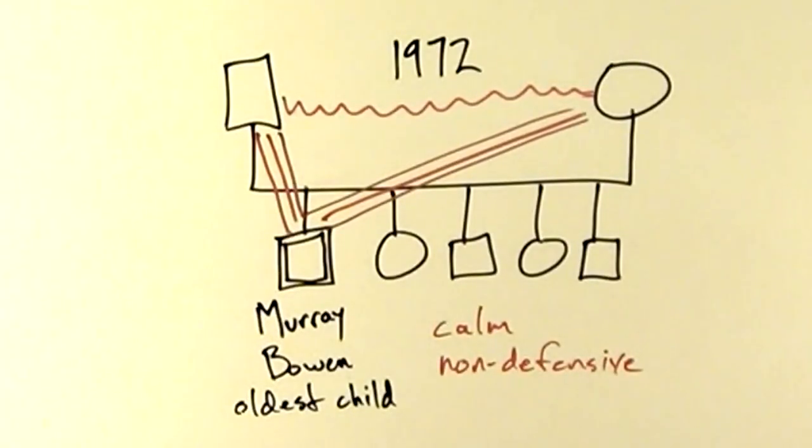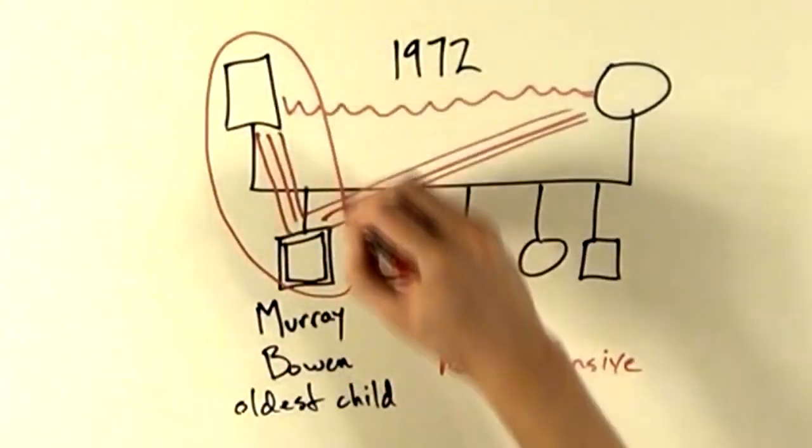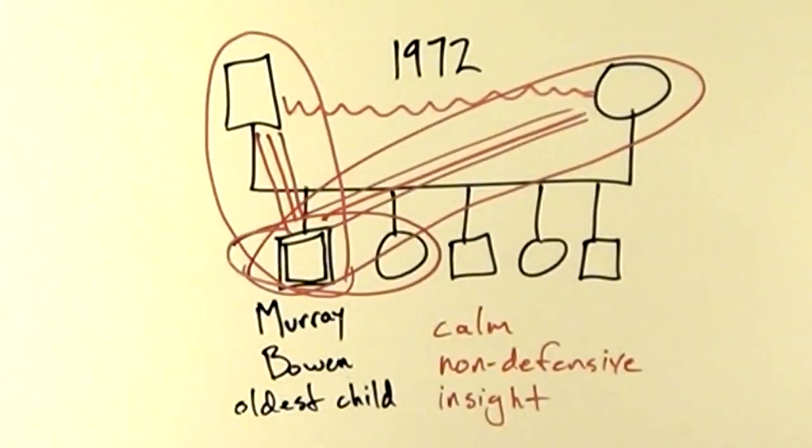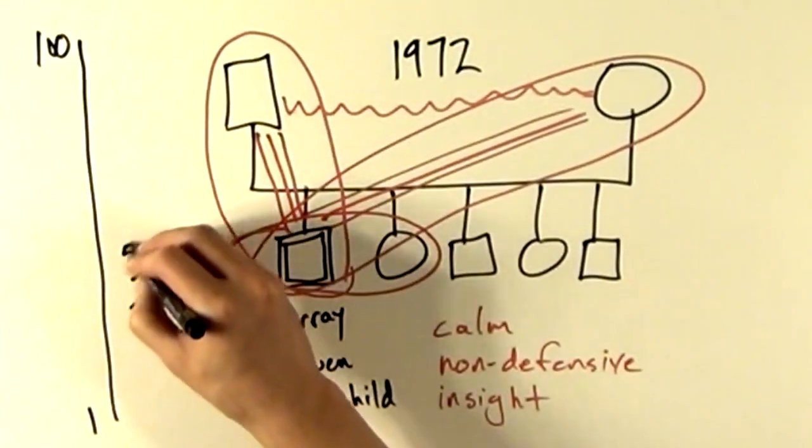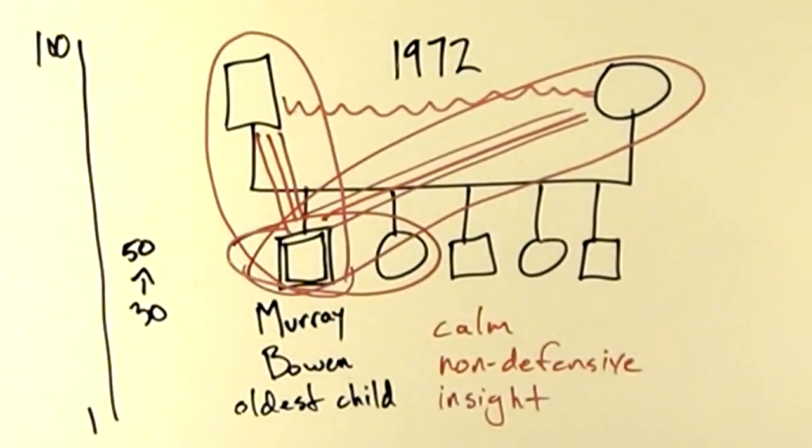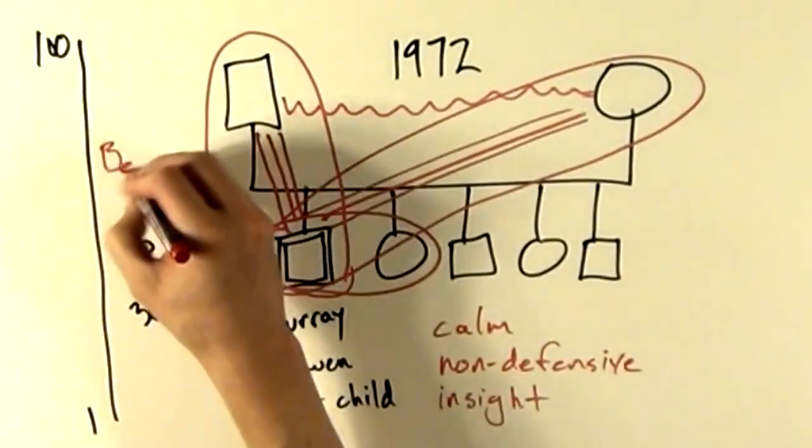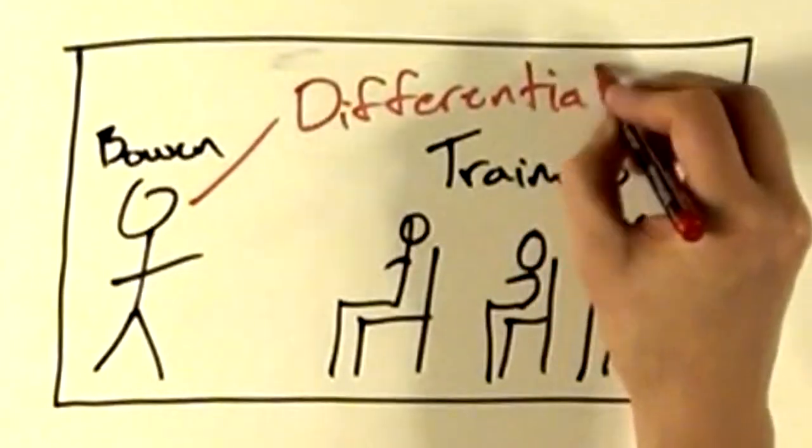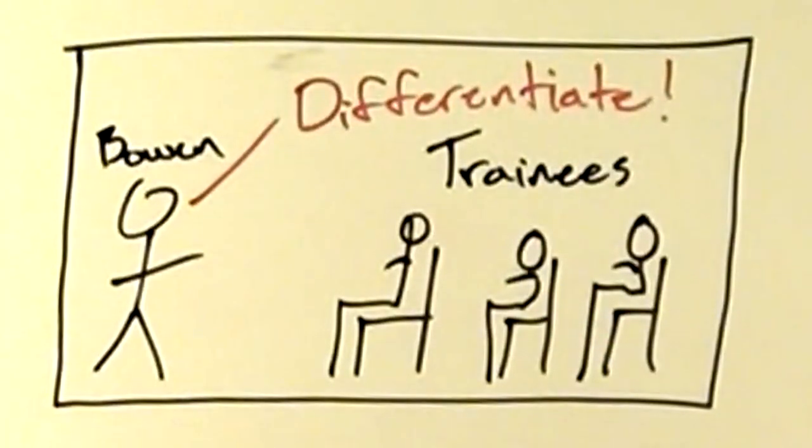He also established emotional connectedness by having one-on-one contact with each family member. He gained insight in how the family system operated, and found that this process increased his overall differentiation level, and he was able to be less reactive with everyone in his life. He also found that he was a better therapist as a result, so he encouraged his trainees to follow the same procedure and differentiate from their own families of origin.